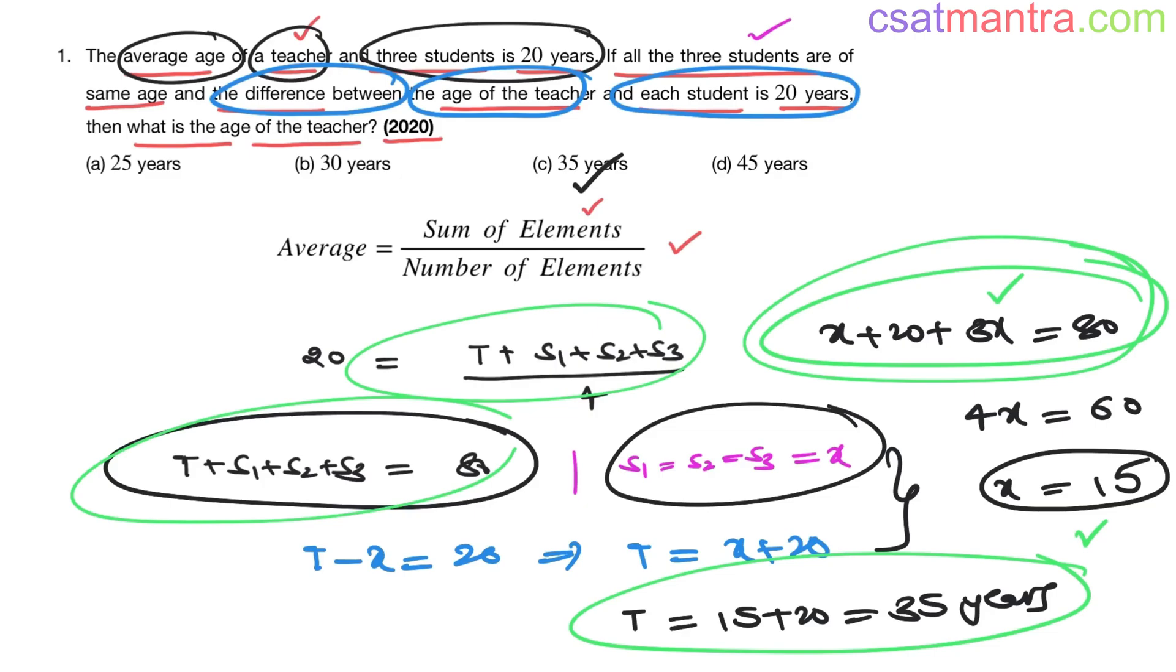So whenever you see a question from the averages chapter, you just have to think in terms of this formula, nothing more. If you don't know something, please assume it. Here student age we don't know, we assumed it as x. From there we got the teacher's age. As simple as this. Clear, right? Thank you.